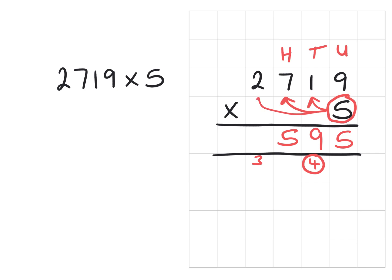And finally we have 5 lots of 2000, which is going to be 10 thousands plus the 3. That's 13. And we're going to carry the extra one over.